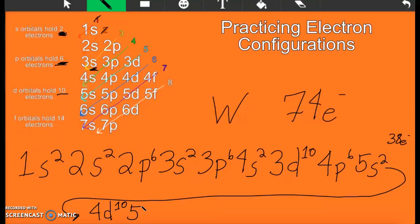Keep going. After 4d, 5p. And p can hold 6. Now if I've done my math correctly, that should put us at 64. Nope. 54. I did not do that correctly.